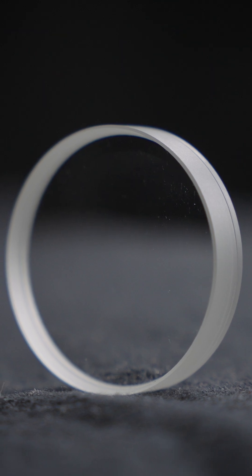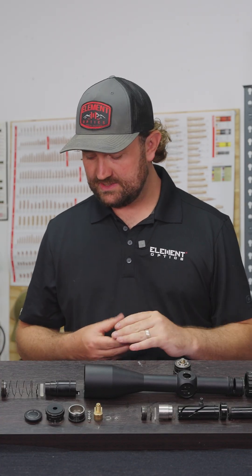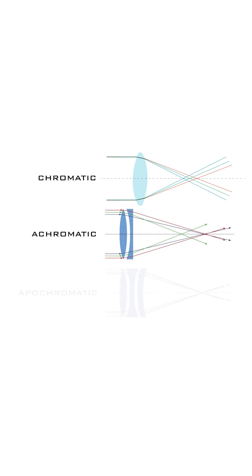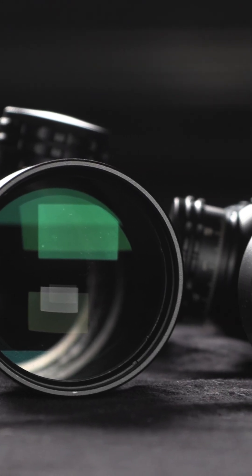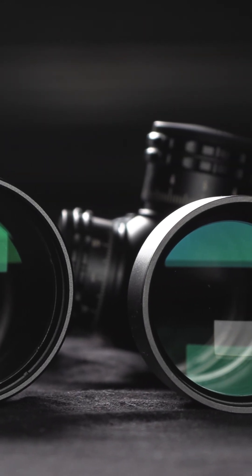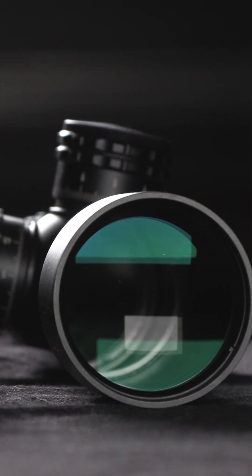But you can take it even further and add more lenses to create an apochromatic lens, which is a bit thicker and weighs a bit more but will correct your image a little bit better. Apochromatic lenses use three elements to bring red, blue, and green light into focus, reducing chromatic aberration even further.